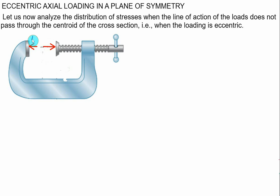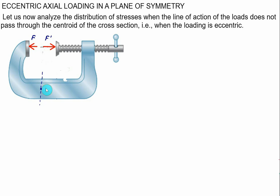F is the force, and F prime is the reaction exerted on the other side of the handle — this force is exerted on the frame. As far as the upper area is considered, it will exactly pass through the centroid, but if we consider the base of the vice and want to find the stresses developed in that section, we have to shift the force and analyze stresses. C represents the centroid, E represents the eccentricity.